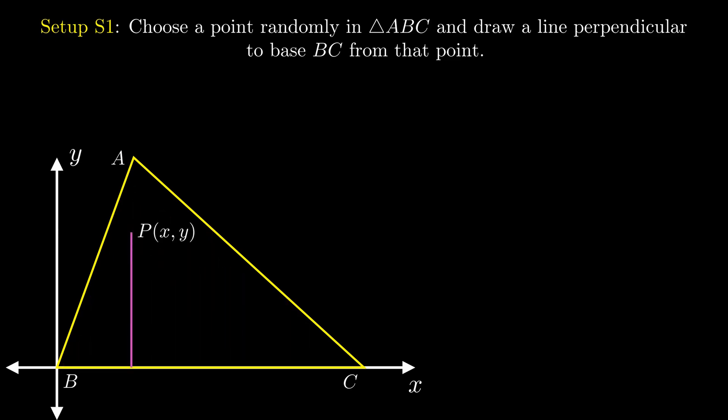If the coordinate of the random point is x, y, then it is clear from the geometry of the figure that the length of this perpendicular line is just y. Therefore, the expected length is given by the double integral of y over the points on the triangle ABC.